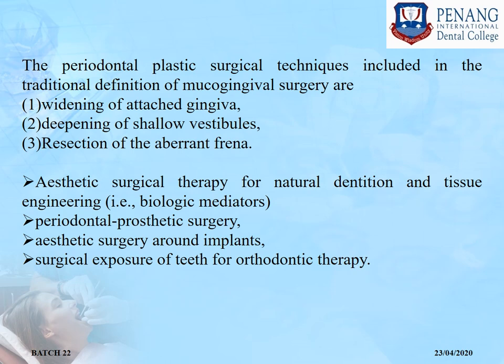The periodontal plastic surgery techniques included in the traditional definition of mucogingival surgery are: widening of attached gingiva, deepening of shallow vestibules, and resection of aberrant frenula. Later, other areas were also included such as aesthetic surgical therapy for natural dentition and tissue engineering, periodontal-prosthetic surgery, aesthetic surgery around implants, and surgical exposure of teeth for orthodontic therapy.